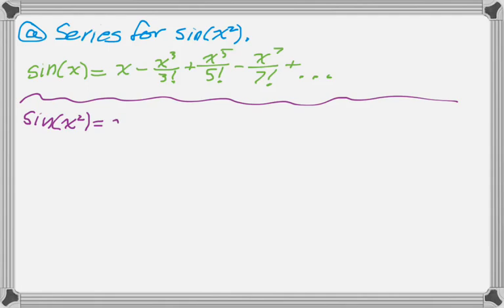So the first x becomes x squared, and then it will be minus, and then x squared cubed is x to the 6th over 3 factorial, and then plus x squared to the 5th is x to the 10th over 5 factorial, and x squared to the 7th is x to the 14th over 7 factorial, plus dot dot dot, and that's all you have to do for part A.